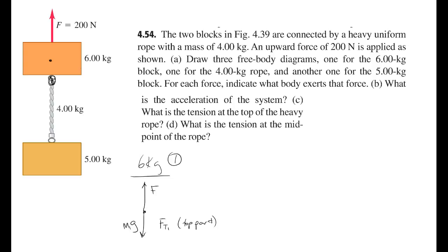Let me move that over and redraw it in a different color so we can see it better. That tension pulling down on block 1 is FT1. Now let's look at the 4-kilogram rope — I'll call that object 2.